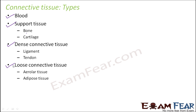Blood is a special type of connective tissue and that is why it is kept separate. Blood, bone, and cartilage are all different types of connective tissue — some people call them specialized connective tissue. Dense connective tissue includes ligaments and tendons. Loose connective tissue includes areolar tissue and adipose tissue. Now we will discuss each of these tissue types in detail one by one.